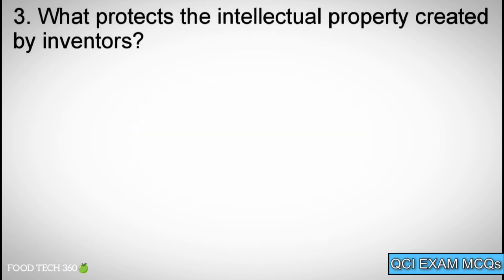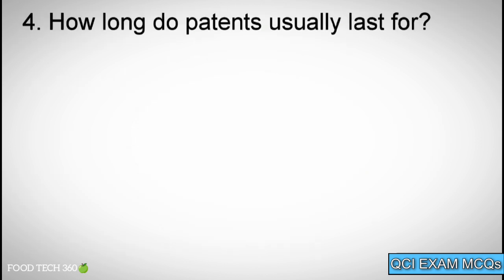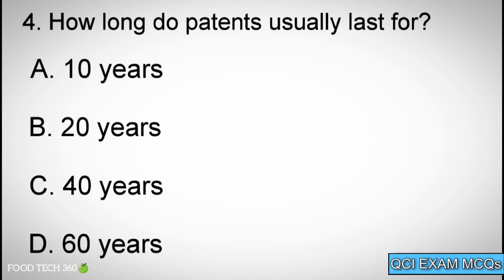Question number three: What protects the intellectual property created by inventors? Options: A. Copyright, B. Geographical Indications, C. Patents, D. Registered Designs. Correct answer: C. Patents.